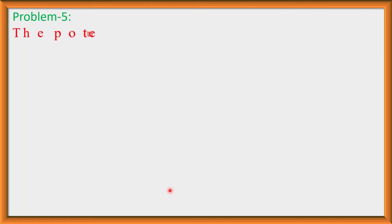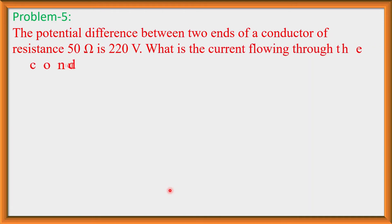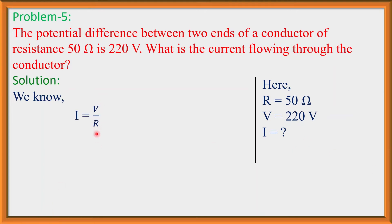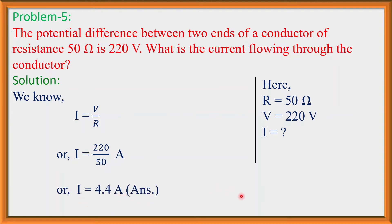Problem 5: The potential difference between two ends of a conductor of resistance 50 ohm is 220 volt. What is the current flowing through the conductor? Given: R = 50 ohm, V = 220 volt. From Ohm's Law, I = V/R = 220/50 = 4.4 ampere. So the current flowing through this conductor is 4.4 ampere.